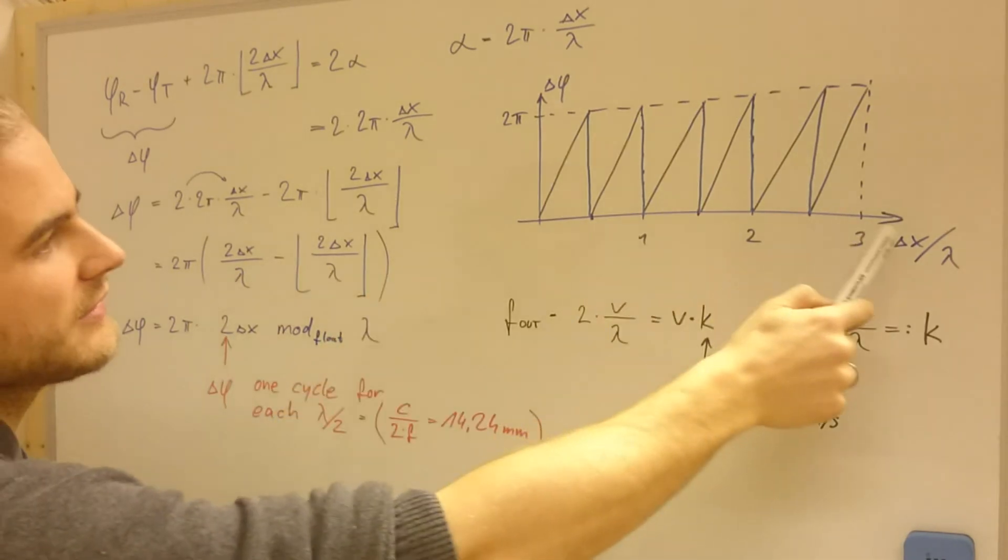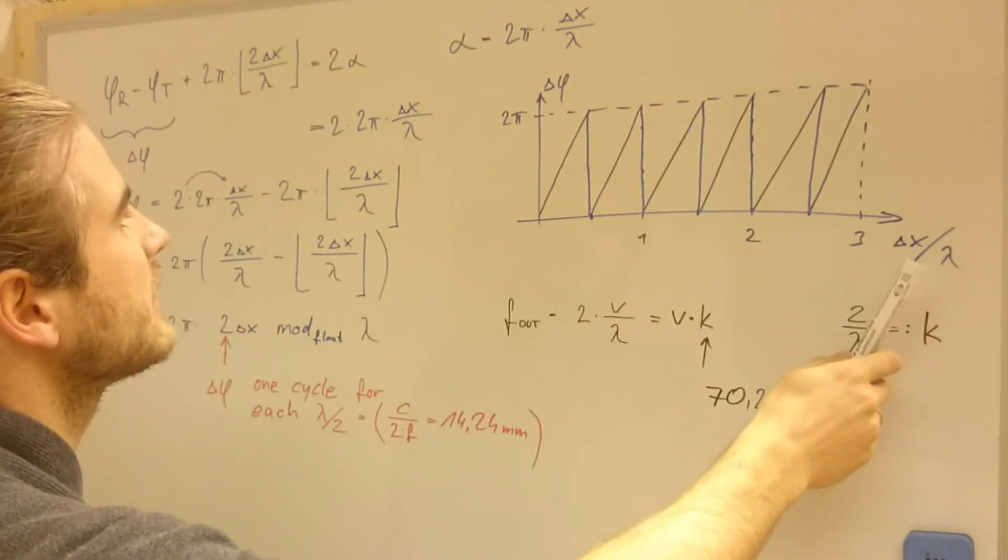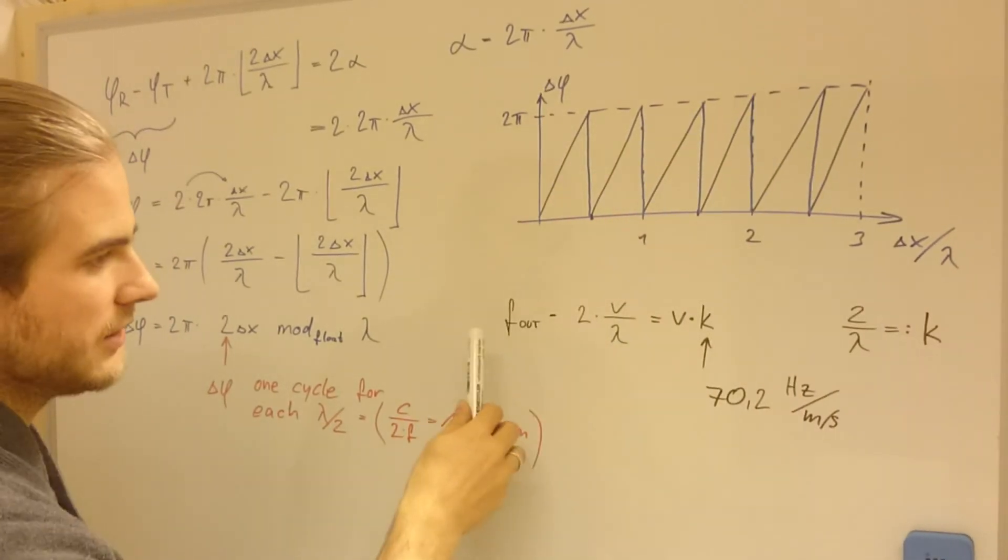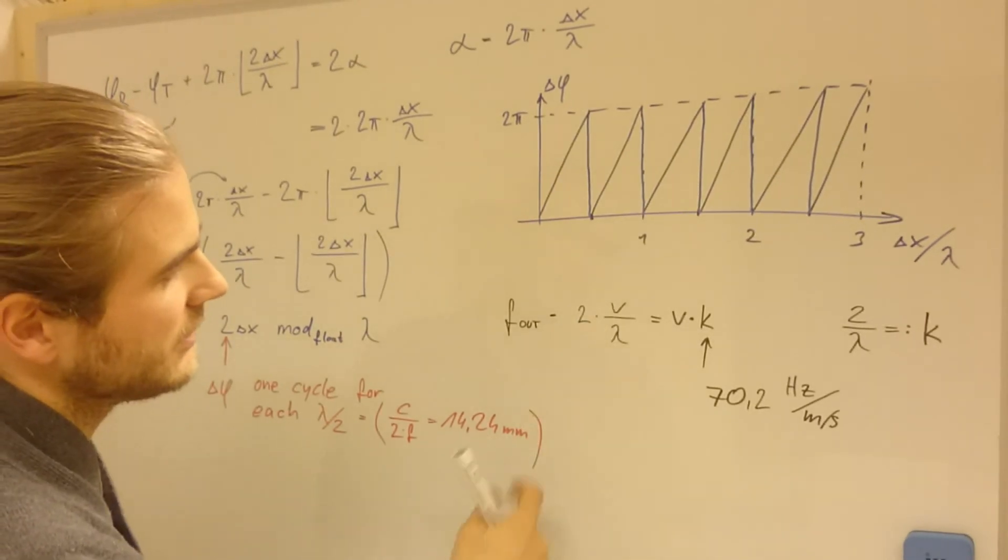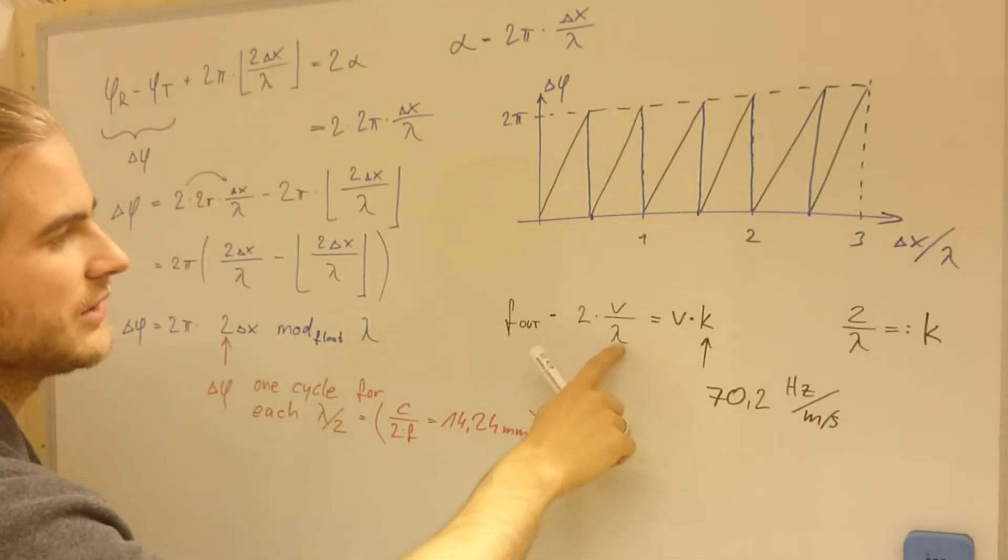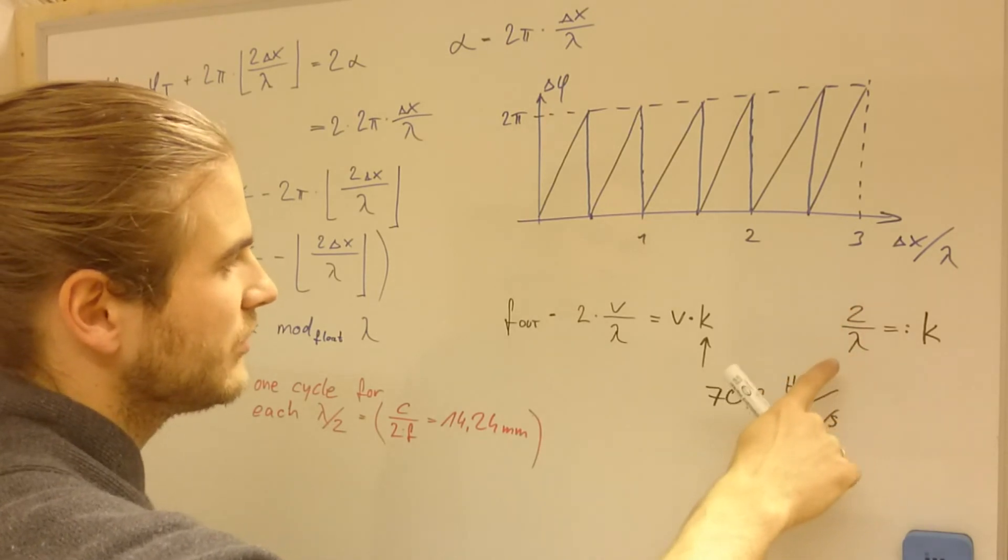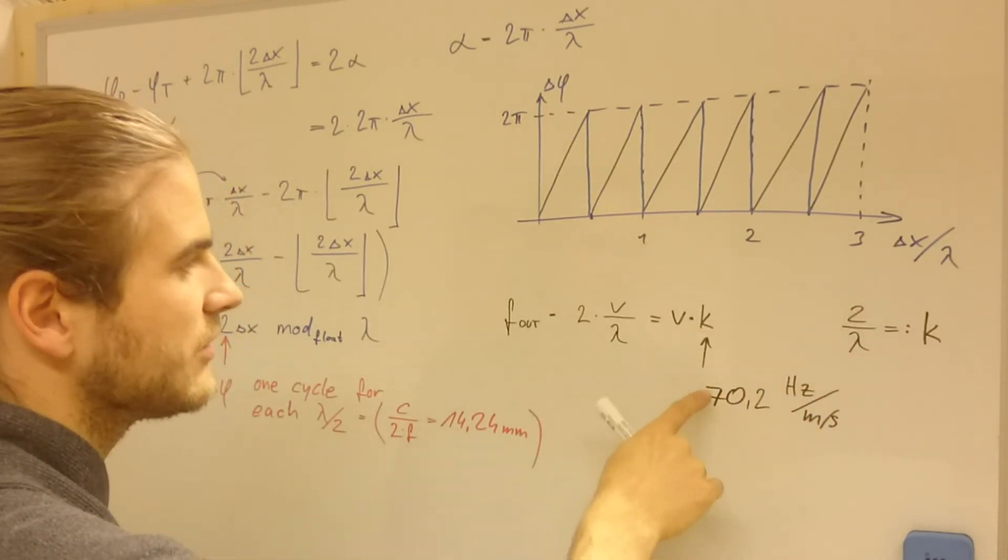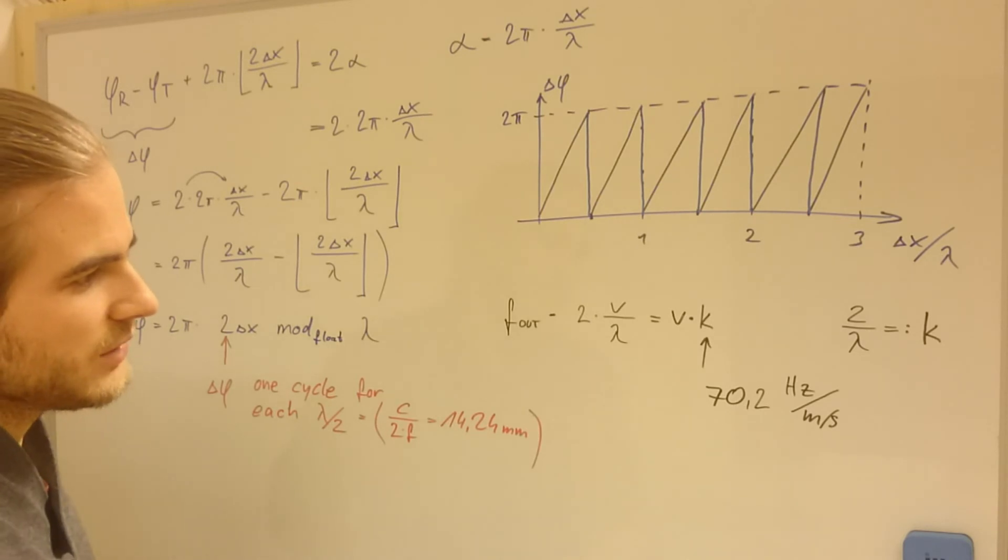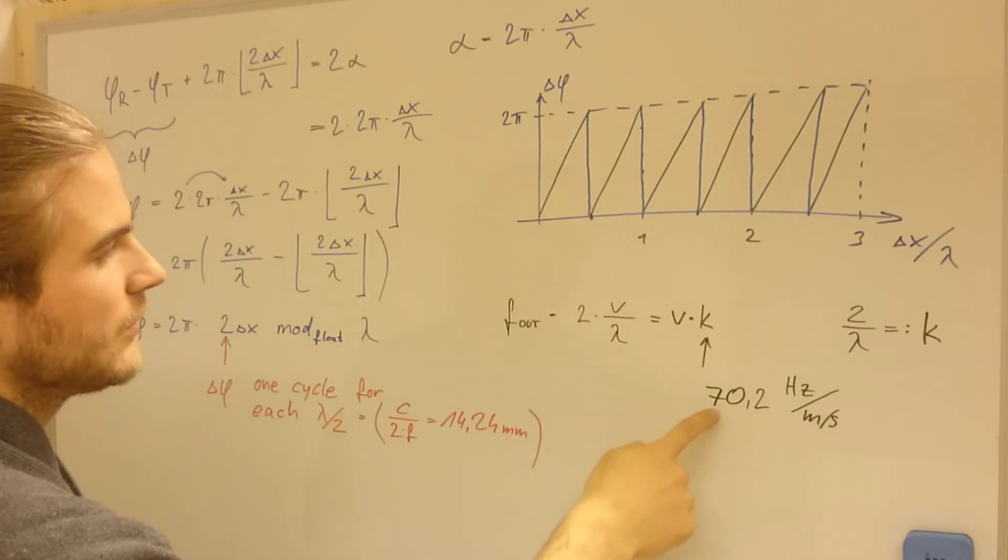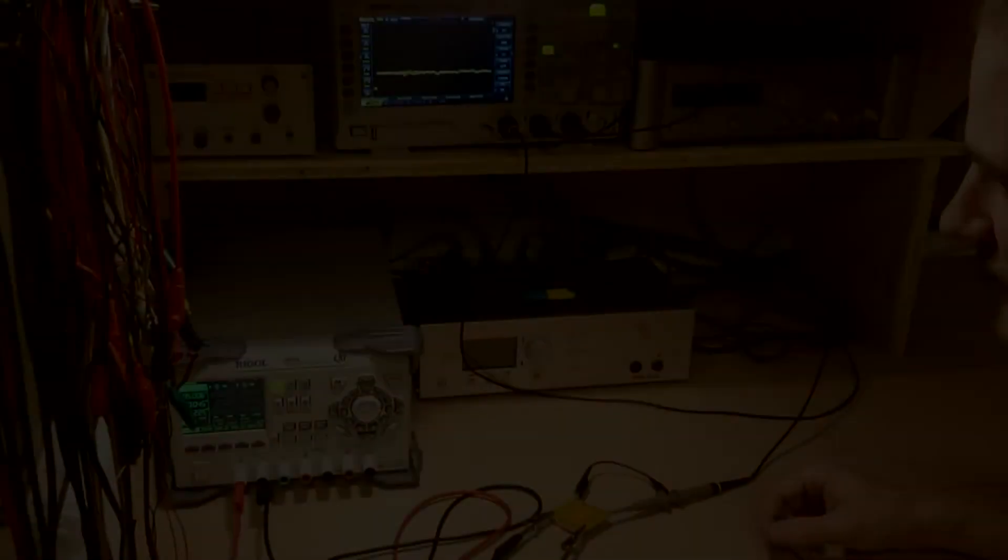When we plot this, on this axis we have the target distance delta x, as a multiple of lambda, and here we have delta phi, then we can calculate the output frequency as 2 times the velocity divided by the wavelength. And we can introduce a new number, I call it k, which is 2 over lambda, and this is the multiplication factor between the velocity and the output frequency. If the target moves with a velocity of 1 meter per second, we get an output frequency of 70.2 Hz.